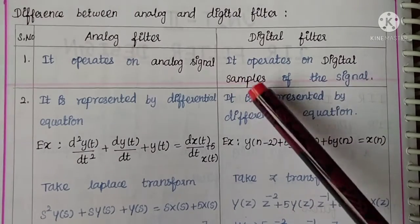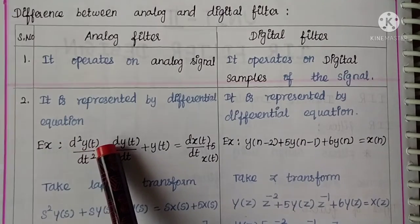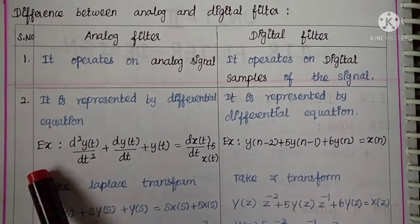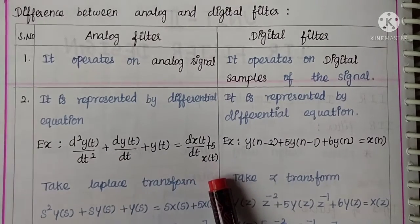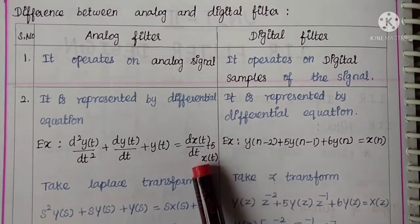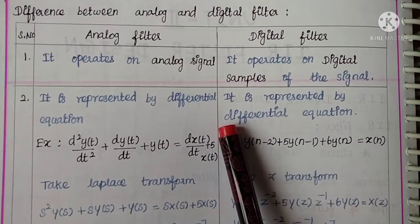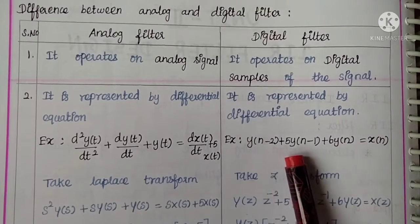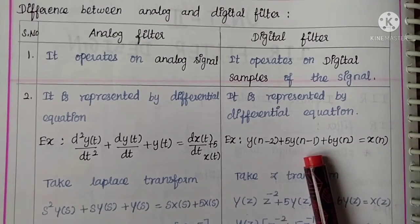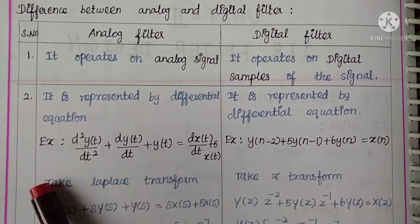Digital filter operates on digital samples of the signal. The second point is: analog filter is represented by a differential equation, for example d²y(t)/dt² + dy(t)/dt + y(t) = dx(t)/dt + 5x(t). In digital filter it is represented by a difference equation, for example y(n-2) + 5y(n-1) + 6y(n) = x(n).